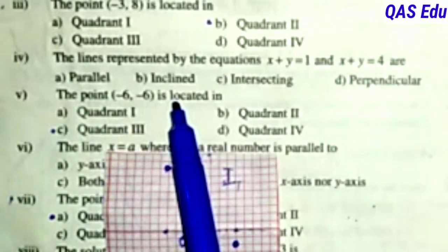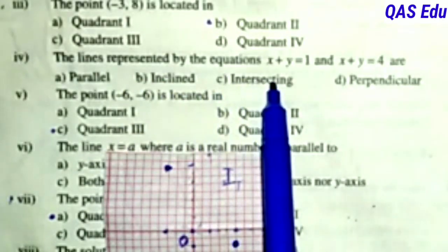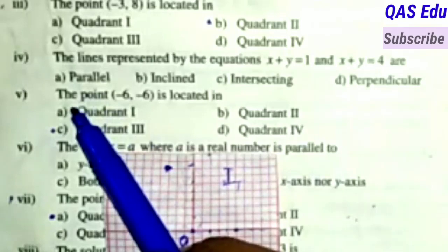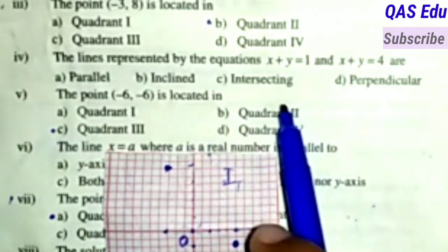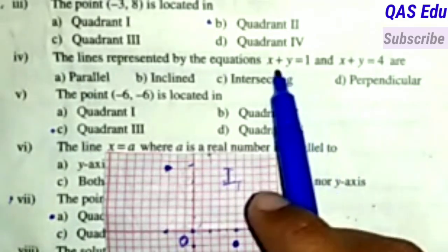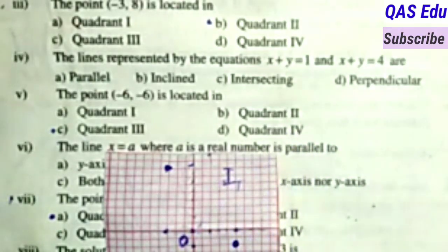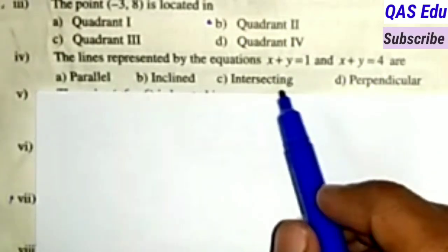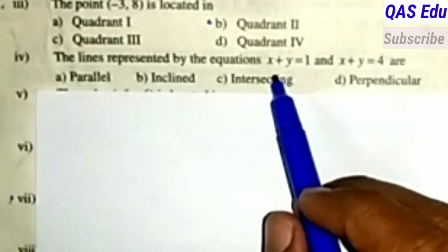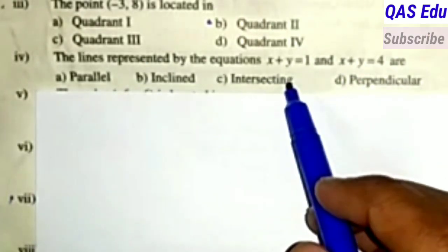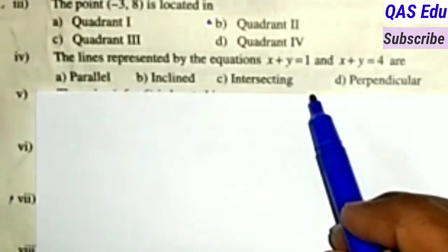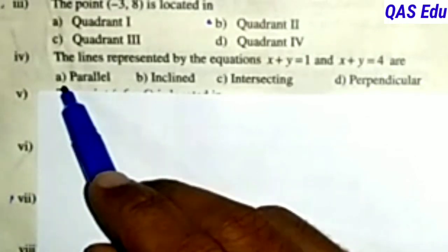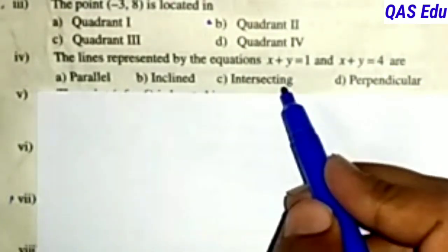Question 4: The lines represented by the equations x + y = 1 and x + y = 4 are dash lines. Are they parallel, inclined, intersecting, or perpendicular? Without plotting, we can tell these are parallel lines because the equations have the same coefficients.